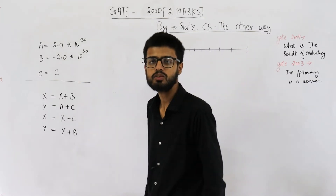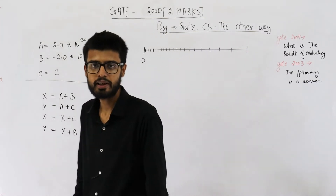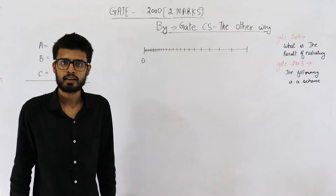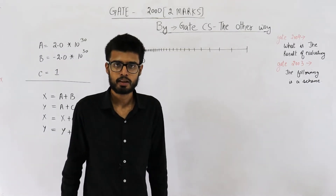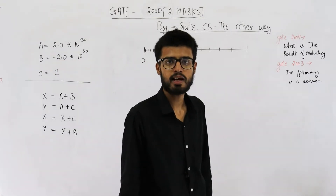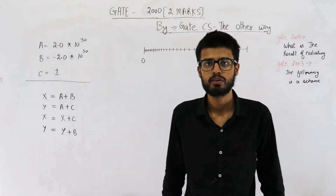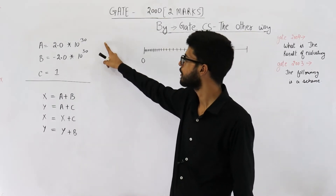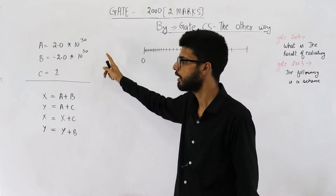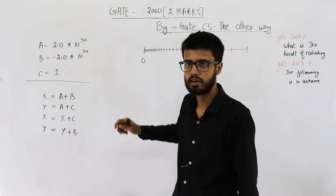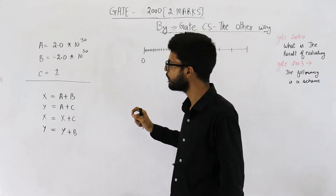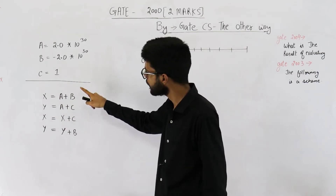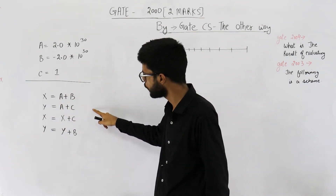Hello people, welcome back. This question is from the GATE 2000 exam and it's for two marks. They are saying if in some computer floating point numbers are represented using 32 bits, and initial values of three variables a, b, c are given, what will be the final values of x and y after executing these four lines?